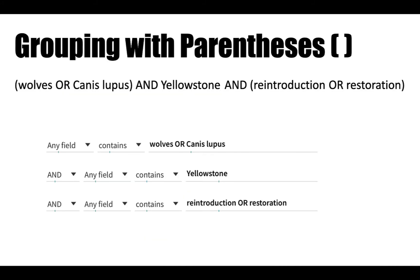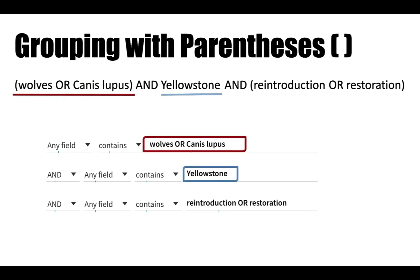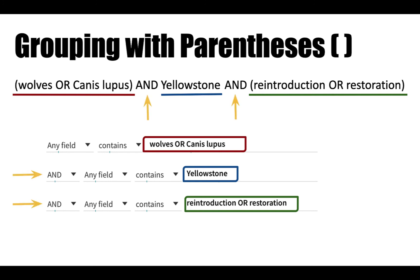One other quick tip: to help the database read your terms in the right order, use parentheses to group your terms together, particularly keywords that you are connecting with OR. If you are in a library database, each individual search box functions as a set of parentheses. The highlighted terms here show how specific keywords fit into the search box and are connected by Boolean operators.